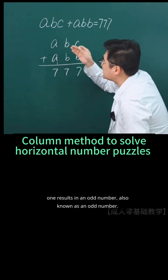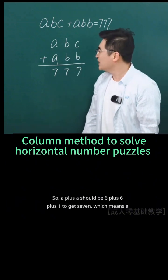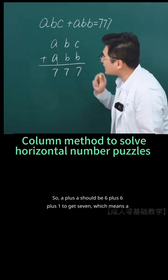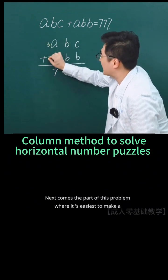So A plus A plus 1 results in an odd number. Therefore, A plus A should be 6, because 6 plus 1 equals 7, which means A must be 3.